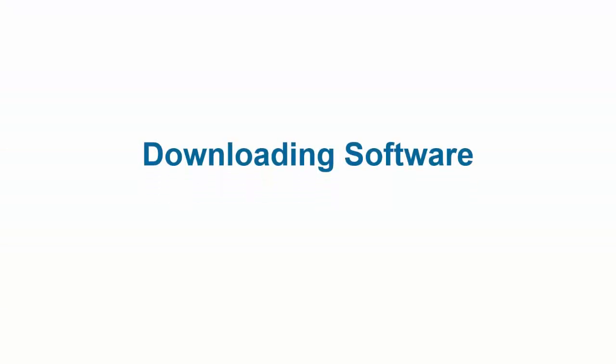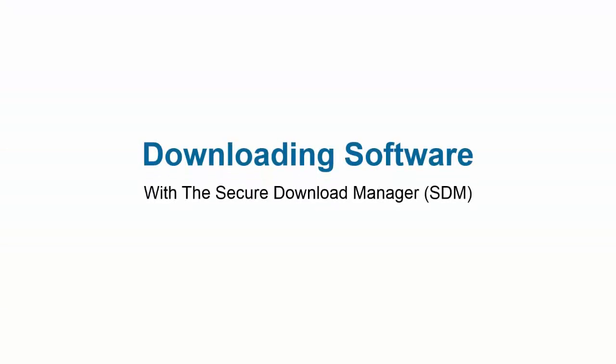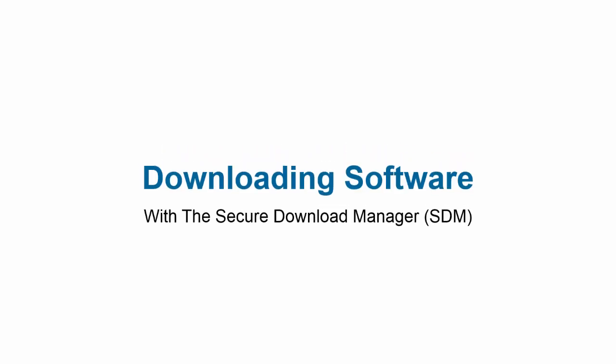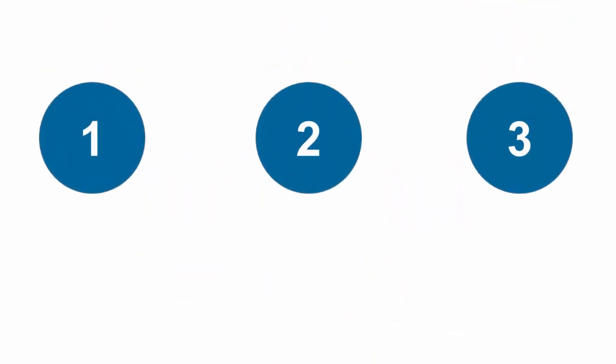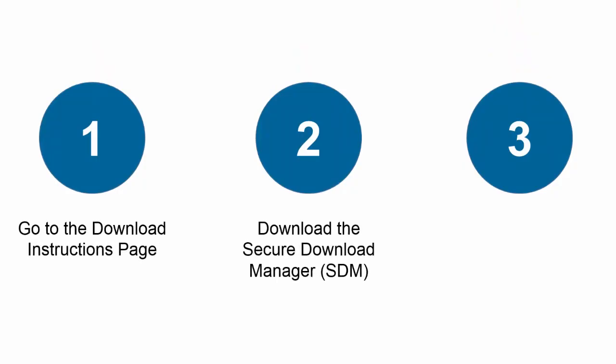Welcome to the On the Hub video guide to downloading software with the Secure Download Manager, or SDM. Getting software with the SDM involves three basic steps: accessing the Download Instructions page, downloading the SDM, and using the SDM to download your software.